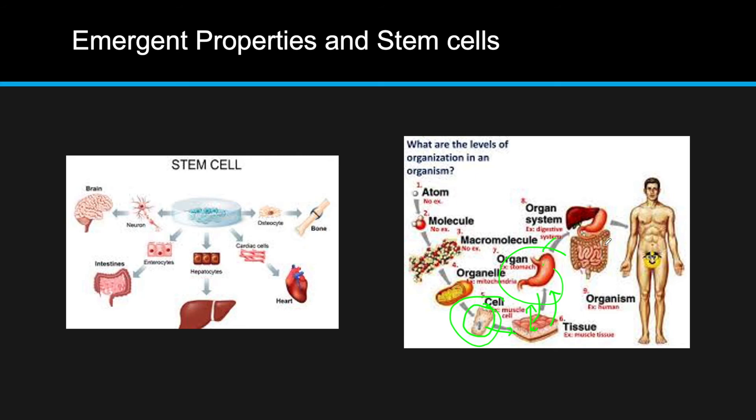Finally, this will go up to organ system and organism. From here, later when we go on to ecology, you'll see organisms going on to create populations, which create communities, which create ecosystems, which create whole biospheres. Now you may be wondering, how do we have different tissues and different cells? This is where stem cells come into place.